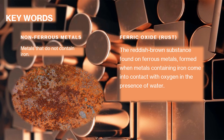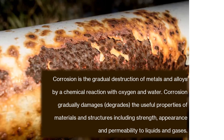Here are some more key words. Non-ferrous metals: metals that do not contain iron. Ferric oxide, or rust: the reddish-brown substance found on ferrous metals, formed when metals containing iron come into contact with oxygen in the presence of water. Corrosion is the gradual destruction of metals and alloys by a chemical reaction with oxygen and water. Corrosion gradually damages or degrades the useful properties of materials and structures, including strength, appearance, and permeability to liquids and gases.